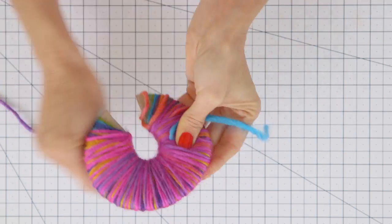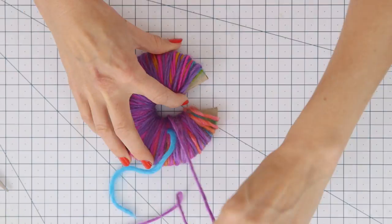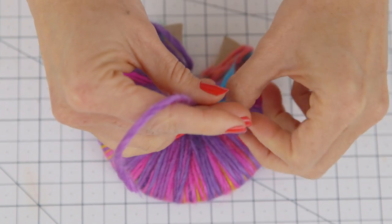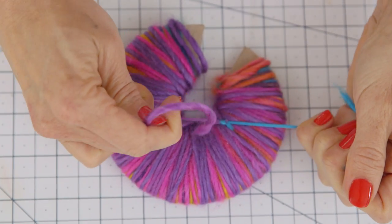There's no specific number of times you have to wrap the yarn, but I like mine to be at least an inch thick. Once you're done, tie off the two ends. And it should look like this.